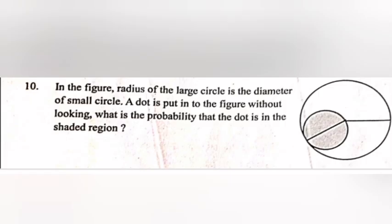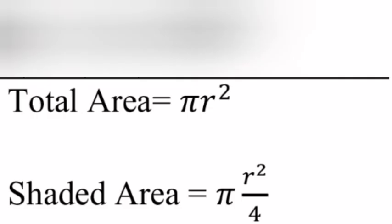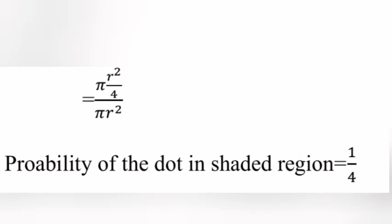Question 10: In the figure, the radius of the large circle is the diameter of the small circle. A dot is put into the figure without looking. What is the probability that the dot is in the shaded region? Answer: Total area equals πr². Shaded area equals πr²/4. Probability equals (πr²/4) divided by πr², which equals 1/4.